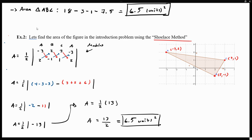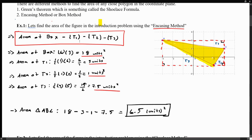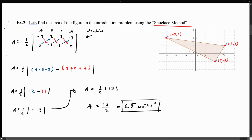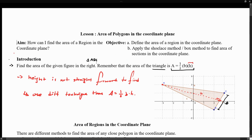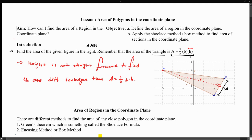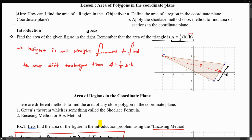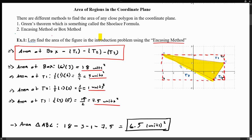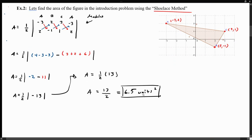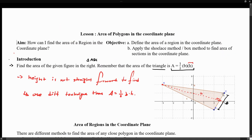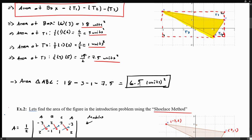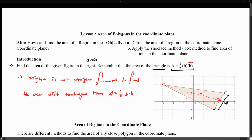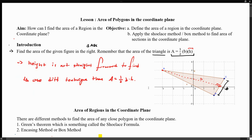Notice that we get the same result — 6.5 units squared — regardless of whether we use the encasing method or the shoelace method. The whole idea of this lesson is to show that we're not just bounded to the standard area formula. If you can place a figure in the coordinate plane, you can use the encasing method — literally box the figure and subtract the surrounding triangles — or you can use the shoelace method, and you will still find the same result. This concludes our lesson on the area of polygons in the coordinate plane.